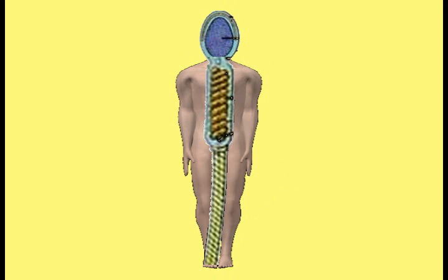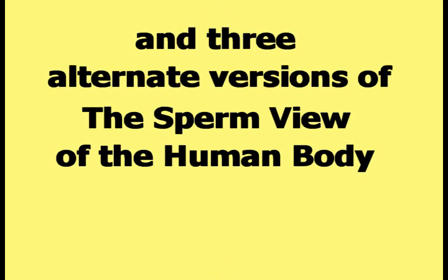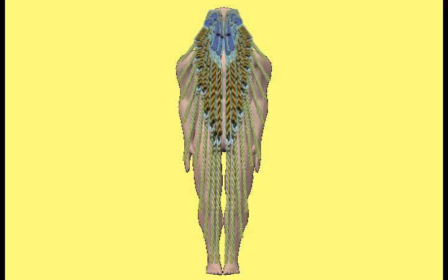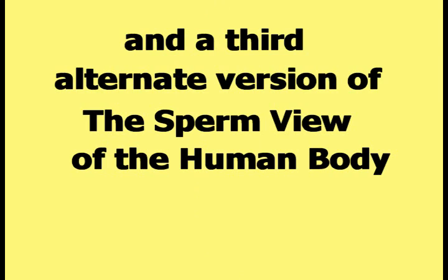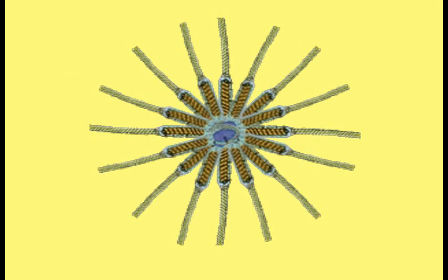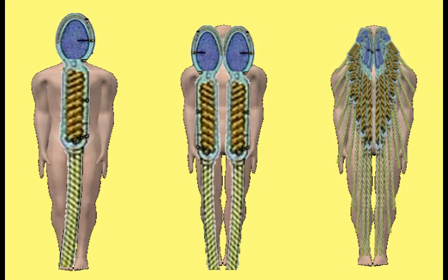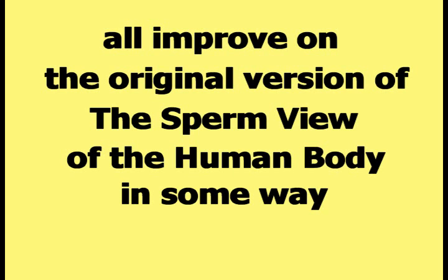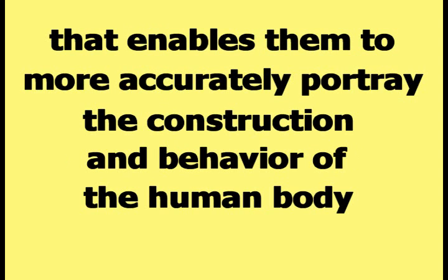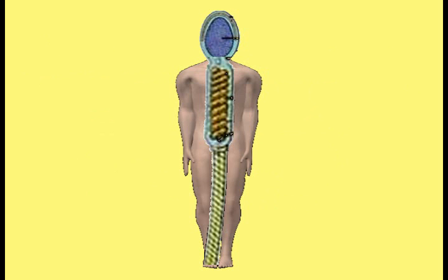This video has introduced the original version of the sperm view and three alternate versions: one using two sperms originating at the head, another using multiple sperms originating at the head, and a third using multiple sperms radiating from a common center that can originate on any part of the body. All alternate versions improve on the original by more accurately portraying the construction and behavior of the human body.